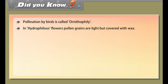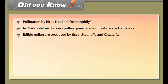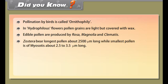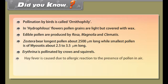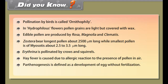An ovule is a minute structure in seed plants containing the embryo sac and surrounded by the nucellus, which develops into a seed after fertilization. It consists of three parts: the integuments forming its outer layers, the nucellus or megasporangium, and the megaspore-derived female gametophyte or mega gametophyte at its center. The mega gametophyte, also called the embryo sac in flowering plants, produces an egg cell for fertilization.